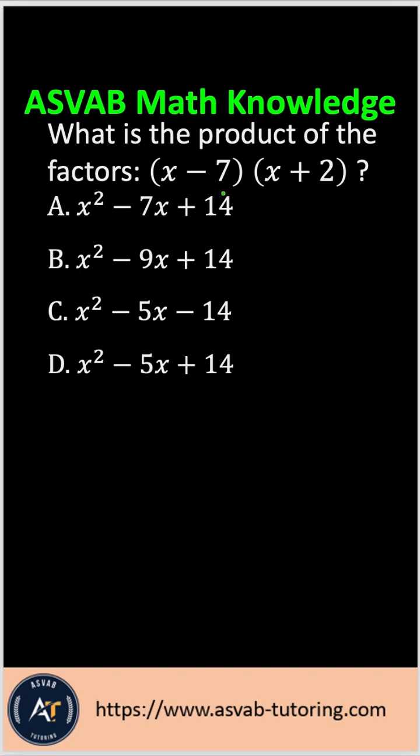This is a very common question, so if you know how to do this problem, you can answer at least three or four problems easily on the actual ASVAB test. So let's learn how to do it: (x - 7) times (x + 2).